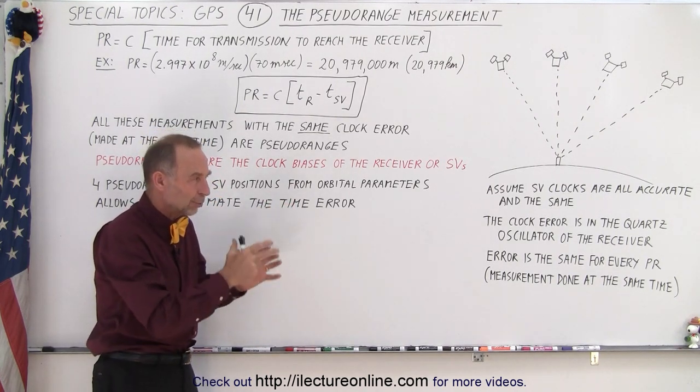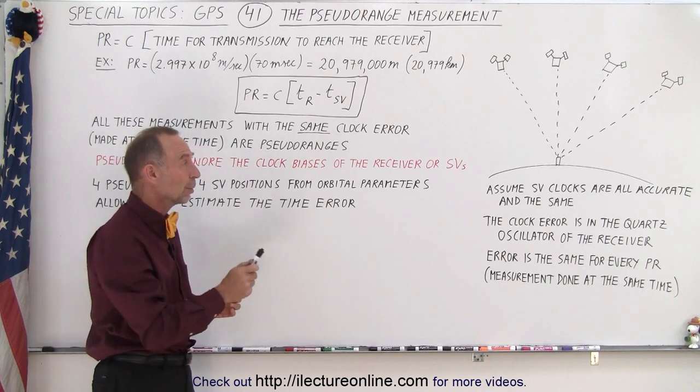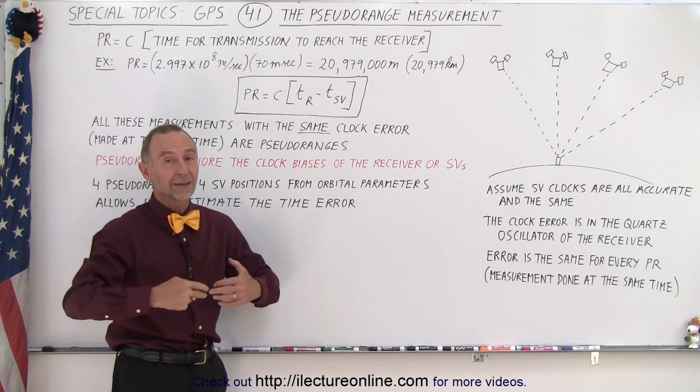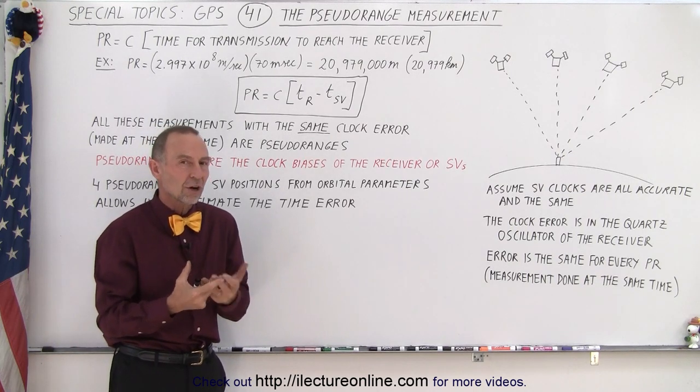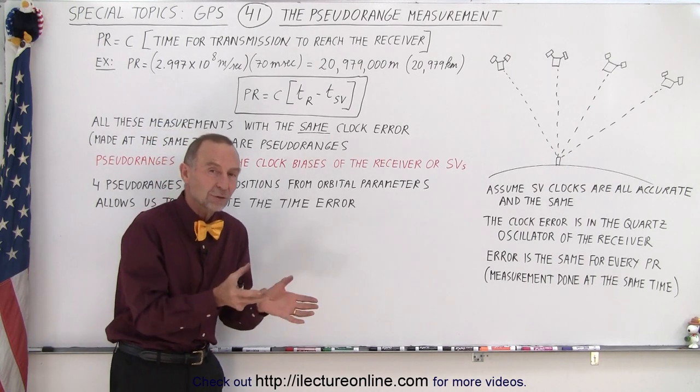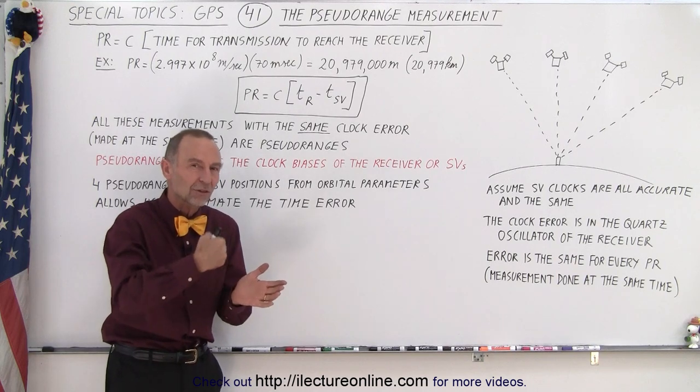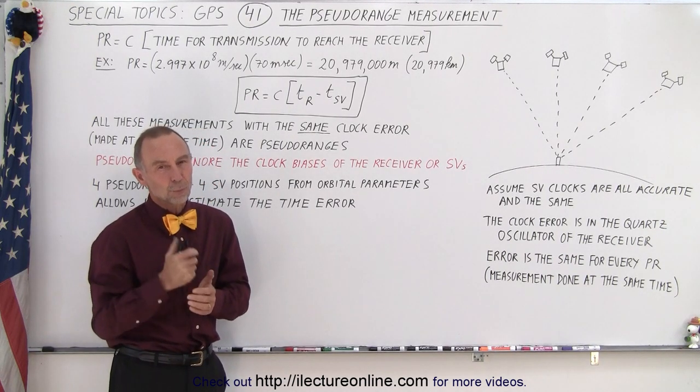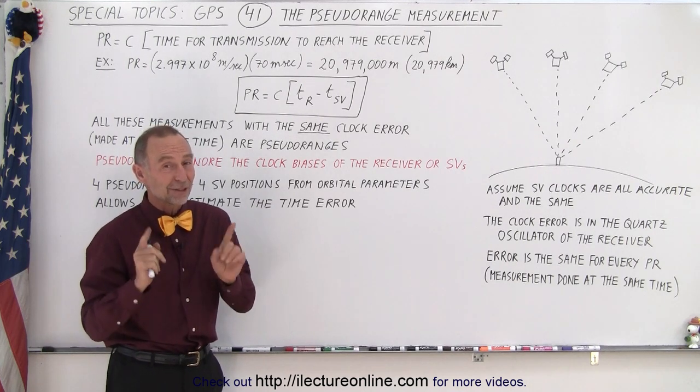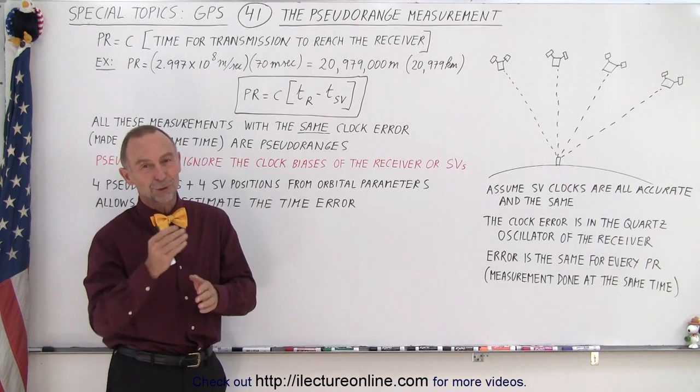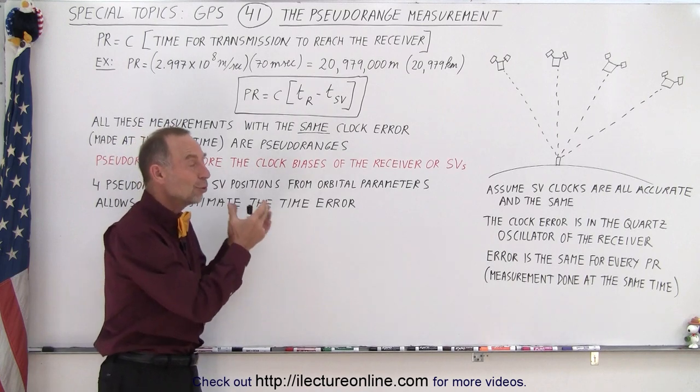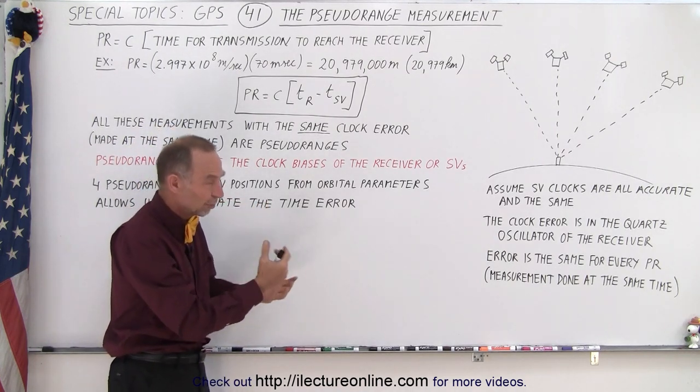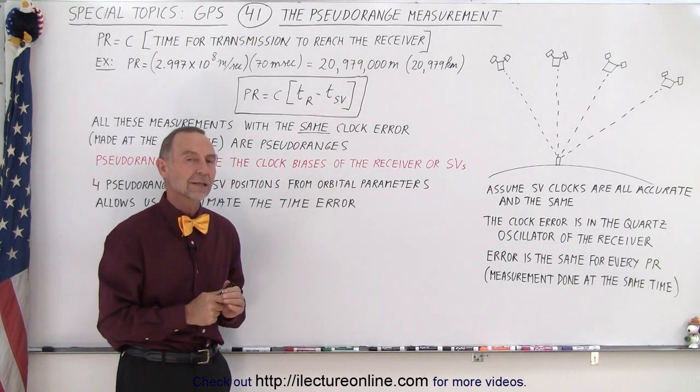We'll show you how to do that by doing some calculations, but at least at this point by doing this we can find the pseudoranges to the four satellites. It's a rough estimate of what the ranges are and then later on we find those ranges once we figure out the errors in the clock and we make all the atmospheric adjustments. So we'll show you how to do that later, but at least now you know hopefully what the pseudorange is and how it's used and measured, at least to get us an initial position for the receiver before we can zero in.